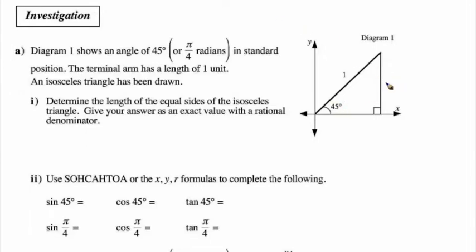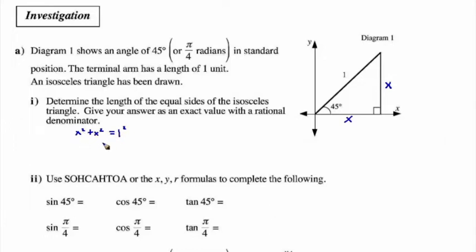In other words, this side, although we don't know what length it is, has the same length as this side. So let's see if we can find out what the length of these sides are. Using the Pythagorean theorem, since we have a 90-degree angle and this radius is equal to 1, we have x squared plus x squared is equal to 1 squared.